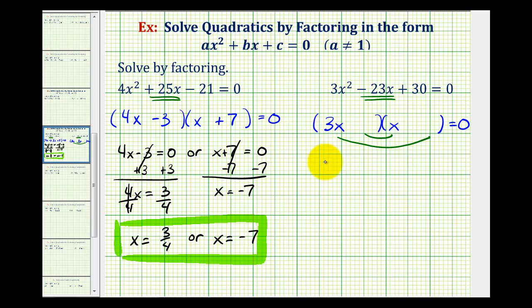Which means we could use negative 1 times negative 30, negative 2 times negative 15, negative 3 times negative 10, or negative 5 times negative 6.